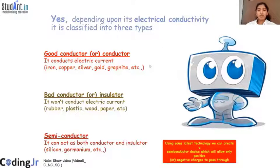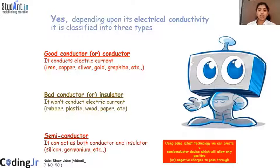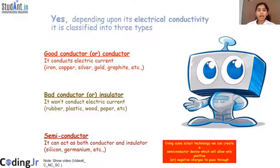Current must be passed through some medium or material. This medium or material can be classified into three types based on its ability to conduct electricity. Materials capable of conducting electricity are called conductors. Those that cannot conduct electricity are called insulators. Some materials will conduct electricity only after undergoing a certain process — those are called semiconductors. With the help of technology, semiconductor devices can be made to allow only positive or only negative charges to pass through.